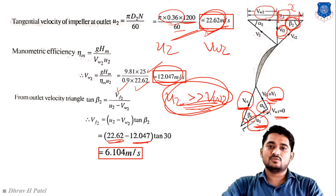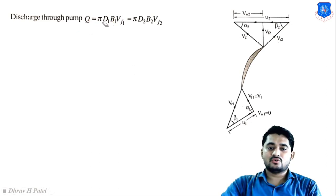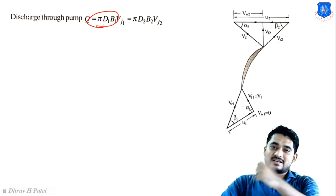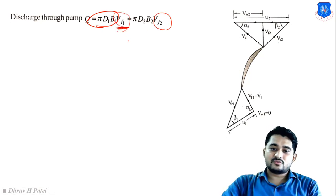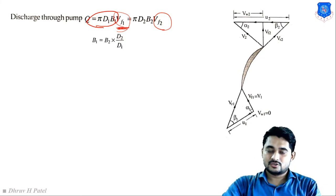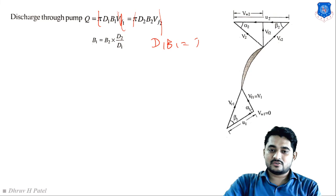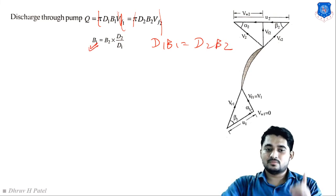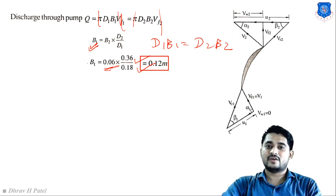From continuity: π d1 B1 V_f1 = π d2 B2 V_f2. Since V_f1 = V_f2, they cancel: d1 B1 = d2 B2. So B1 = B2 × d2 / d1 = 0.06 × 0.36 / 0.18 = 0.12 m. Width at inlet B1 = 0.12 m.